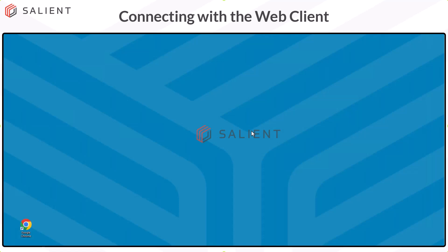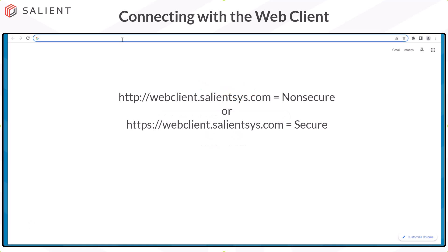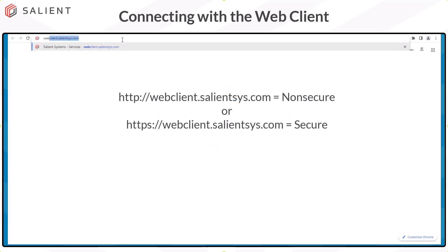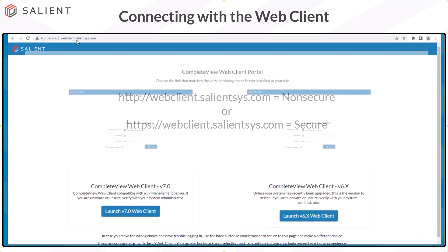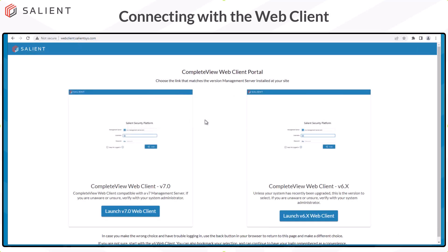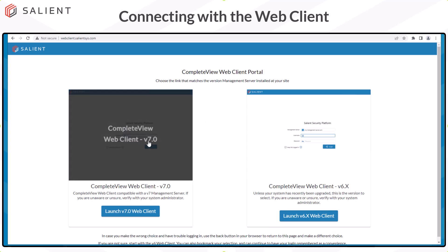To access the Web Client, begin by opening your browser and navigating to webclient.salientsys.com. From the two options on this page, select the Web Client that matches the general version of your management server.